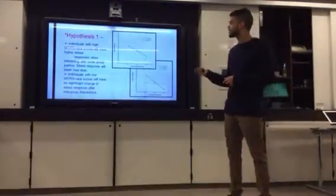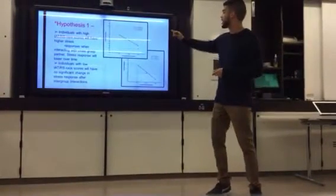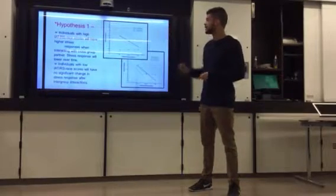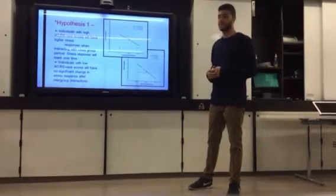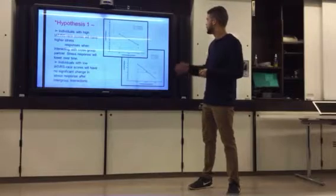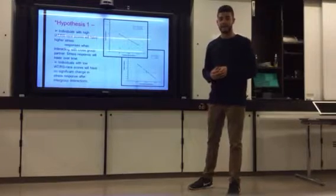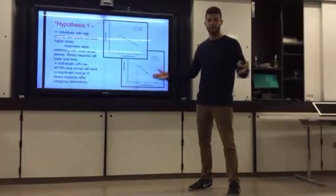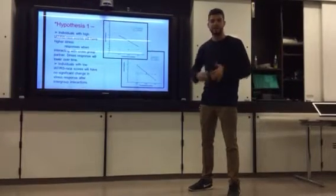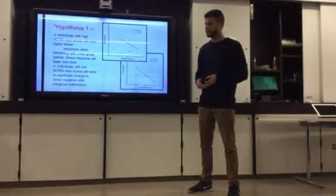So what were the results? For hypothesis one we were able to see that it was supported. Individuals with the high scores as you can see right here with the high RS race and the high IAT did have higher stress responses than the individuals who were less likely to discriminate or feel discriminated against. But the individuals with the high RS race and the high IAT scores did have a steady decline in that anxiety over the course of having these friendship meetings with their cross-group friend. So this was indicative of the fact that being able to have more exposure with someone in your cross-group does lower that stress response and decrease that anxiety.